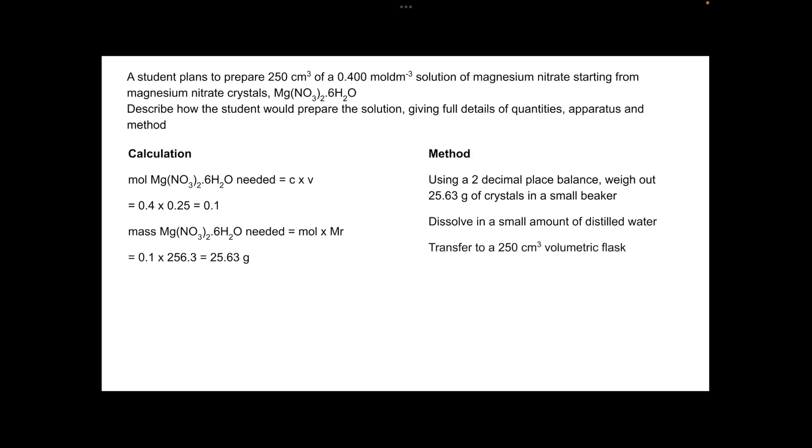You'd then transfer that to a 250 cm³ volumetric flask, not a conical flask, a volumetric flask. And then typically you would rinse out the beaker that you dissolved the crystals in, and you would add the washings to the volumetric flask.